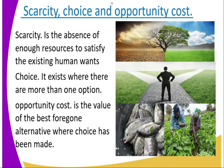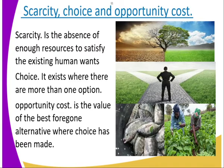We now go to scarcity, choice, and opportunity cost. Scarcity is the absence of enough resources to satisfy existing human wants. For example, there is not adequate fish everywhere in order for it to satisfy human wants. Looking at the nature of the landscape, one side is dry and the other side has water — so the things necessary for a green environment are scarce.